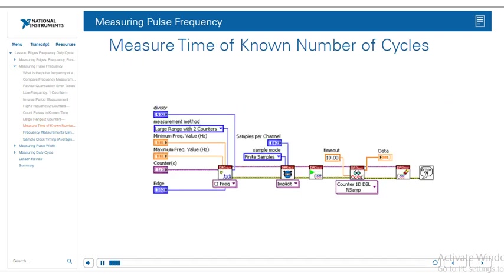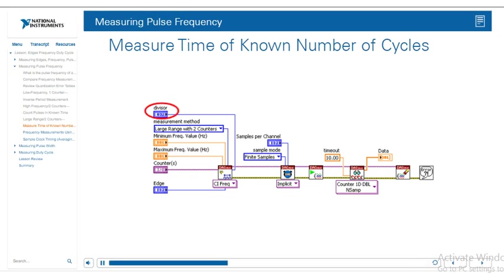Let's look at how to do this in the DAQmx API. For this frequency method, we specify the measurement method as large range with two counters. We're still using CI Frequency as before. We're going to change the method to large range with two counters. You'll notice a divisor input — the divisor specifies the value to divide the input signal by, so we can create a lower frequency signal that the second counter can more easily measure. The larger the divisor, the more accurate the measurement. However, too large a value could cause the count register to roll over, resulting in an incorrect measurement.